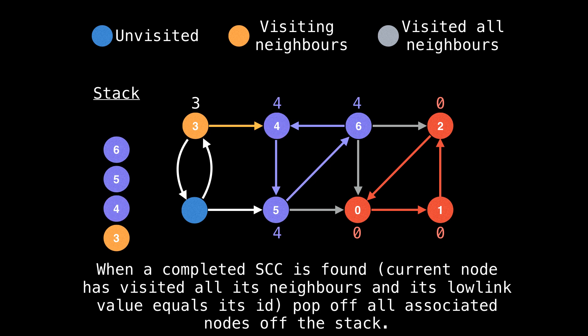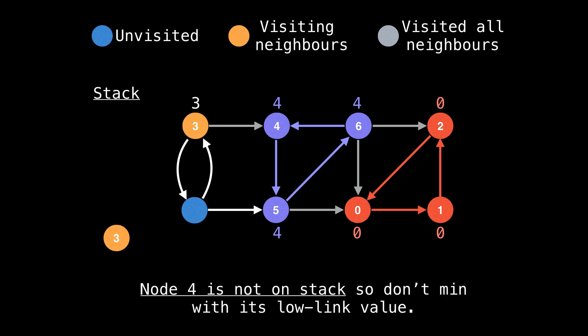Coming back to node four, we visited all its neighbors and its ID is equal to its low link value, so it marks the start of a strongly connected component. We now have to remove all associated nodes in the strongly connected component from the stack — these would be all of the purple nodes. Now coming back to node three, we cannot min its low link value with node four, because we just removed node four from the stack. You will also notice that node three's ID is equal to its low link value, so it should be the start of a strongly connected component.